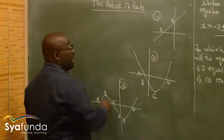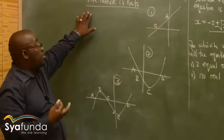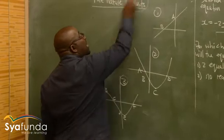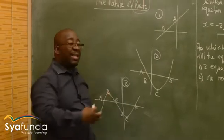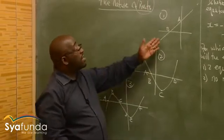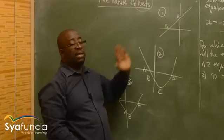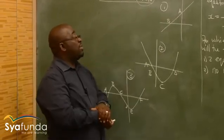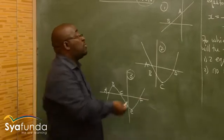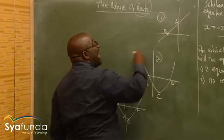Remember, the topic is the nature of roots. What are roots? Roots are nothing else but the x-intercepts. When you look at this graph, we've got point A and point B. The root is not point A — it is point B, the x-intercept.